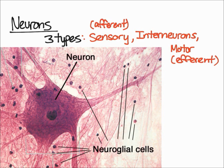Sometimes sensory neurons are called afferent neurons — it's the same thing. Similarly, motor neurons are sometimes called efferent neurons. Sensory neurons take the impulse and carry it to the central nervous system, which is your brain and spinal cord. Interneurons essentially connect sensory neurons to motor neurons, and they are located in the brain and spinal cord.